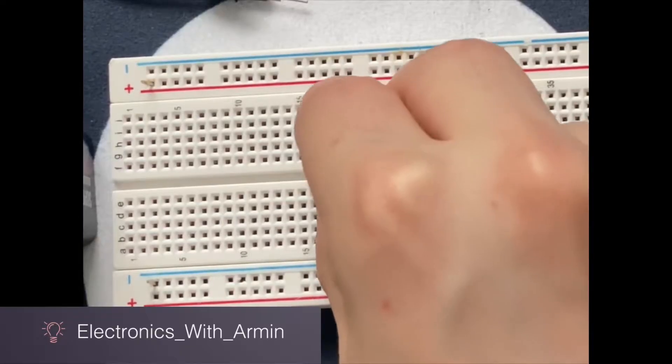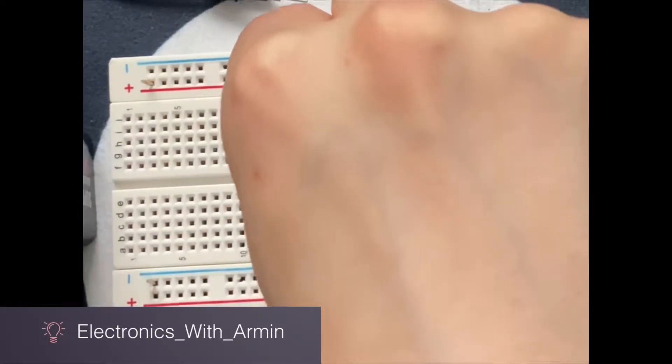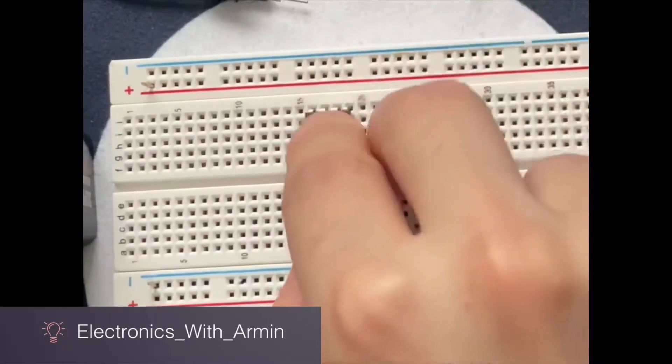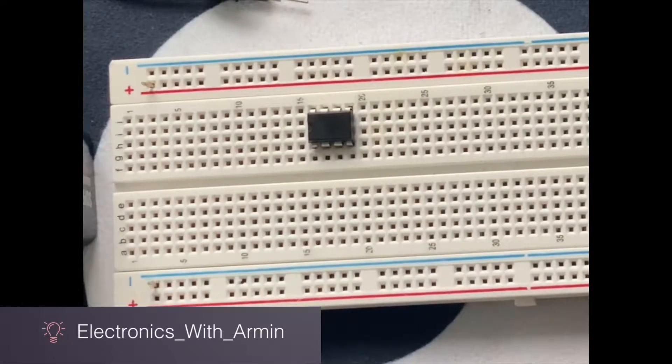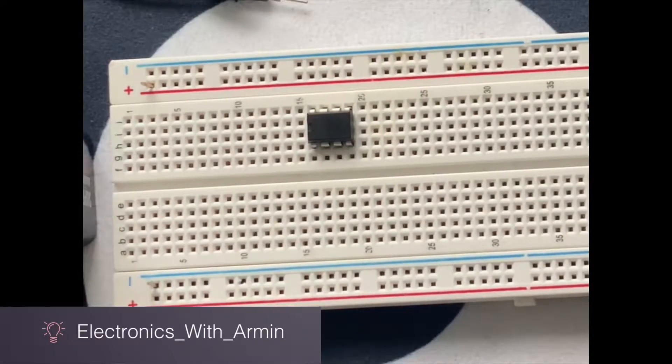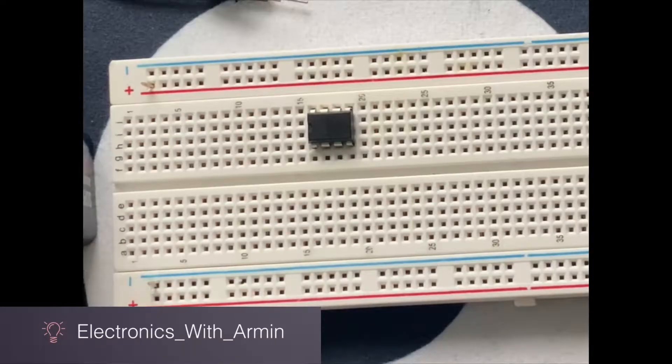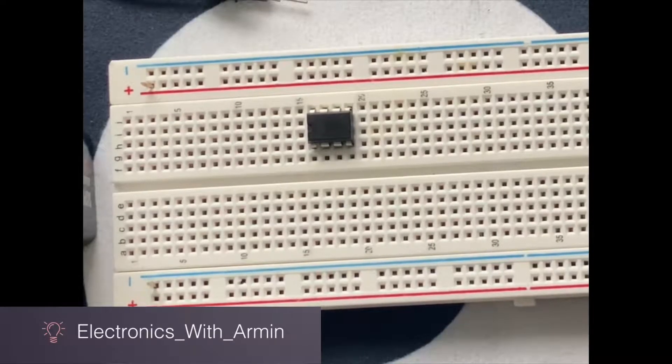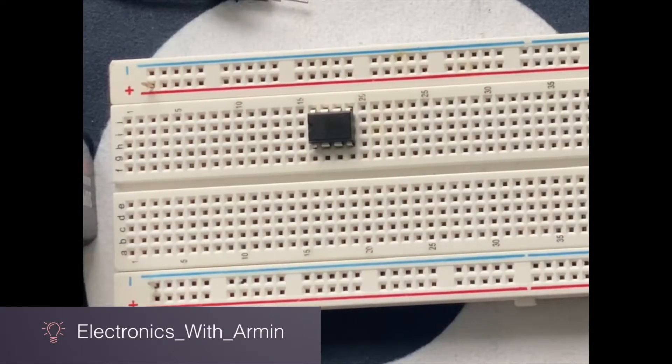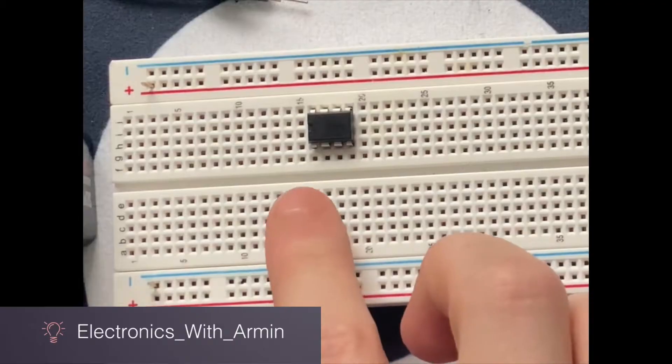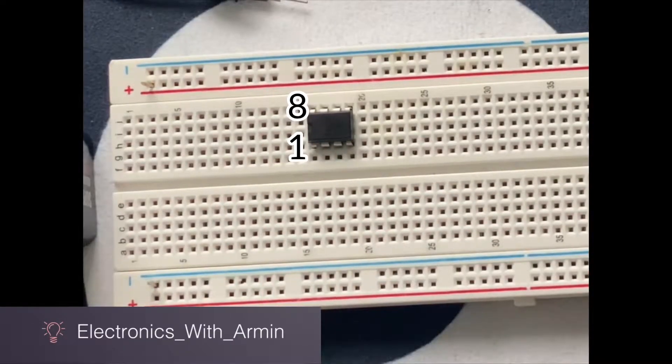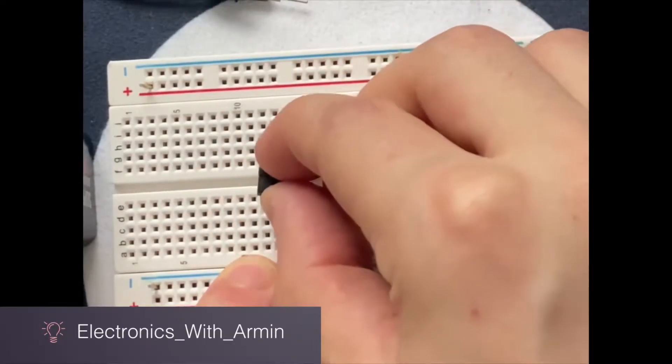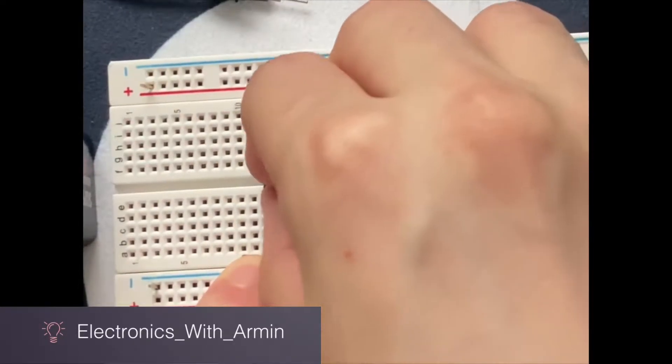Now for the IC, imagine I connect the IC like this into the breadboard. In this case, pin 1 which is ground is connected to pin 8 which is power supply. We cannot have any current in our circuit and the circuit doesn't work. Pin 1 and pin 8 have to be separated from each other, so I'm going to connect the IC like this.